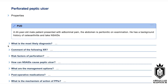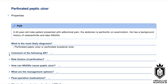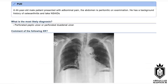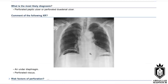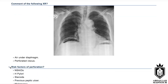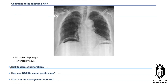What is the most important finding on the X-ray? There is air under the diaphragm, which denotes a ruptured viscus, mainly due to perforation. The risk factors for perforation include NSAIDs, H. pylori, smoking, and steroids.